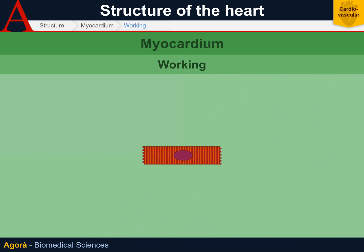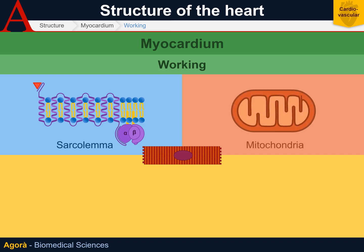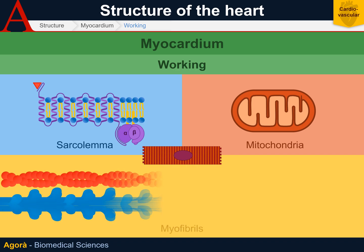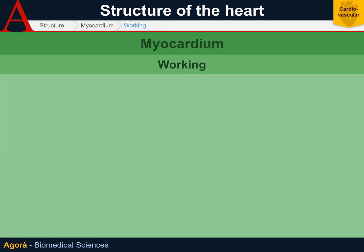The myocardium is also characterized by the sarcolemma, which contains beta-adrenergic receptors stimulated by the sympathetic nervous system (SNS), a very large number of mitochondria due to the highly oxidative metabolism of the heart, and myofibrils whose structure can be compared to that of striated muscle.